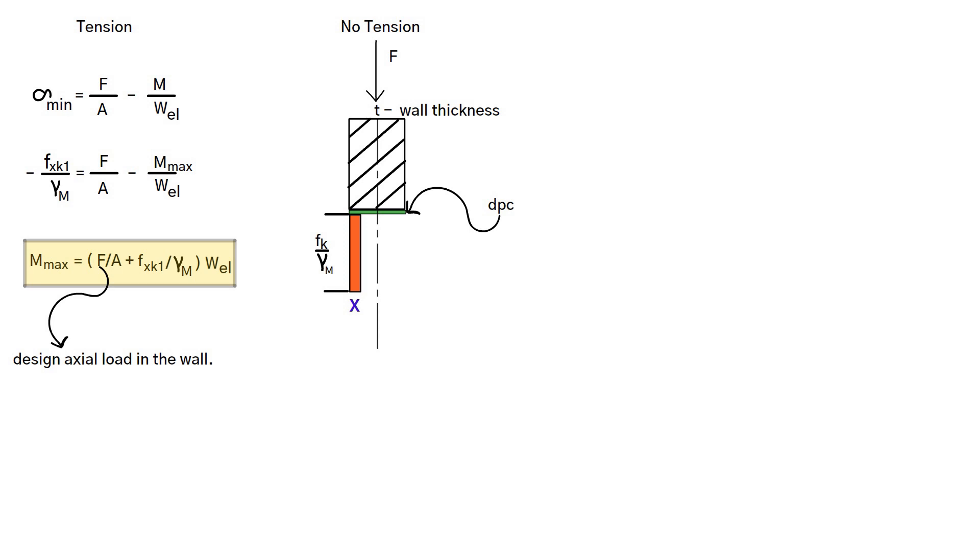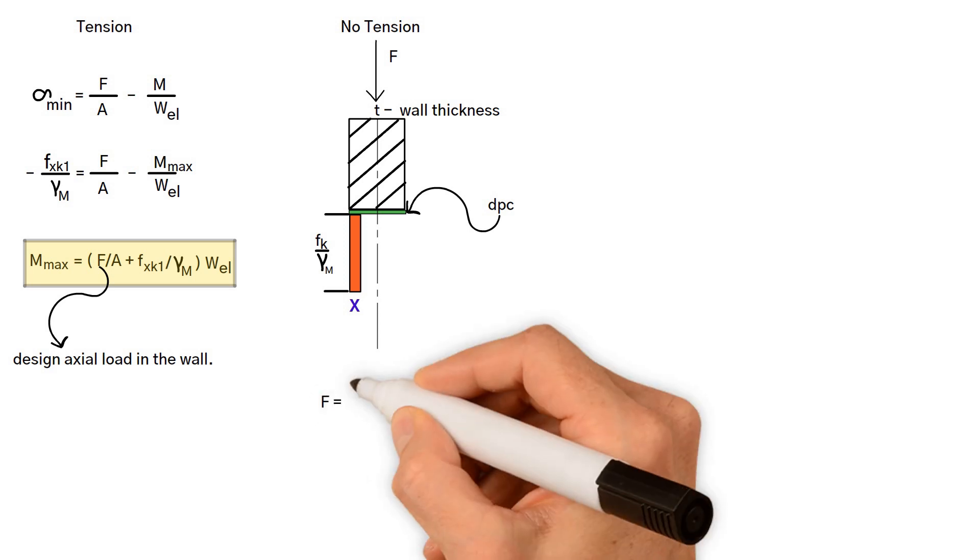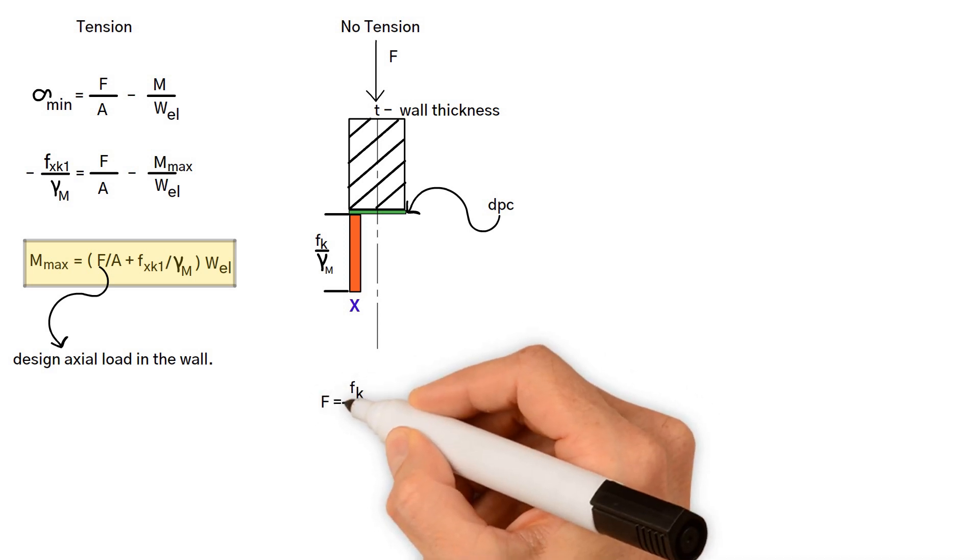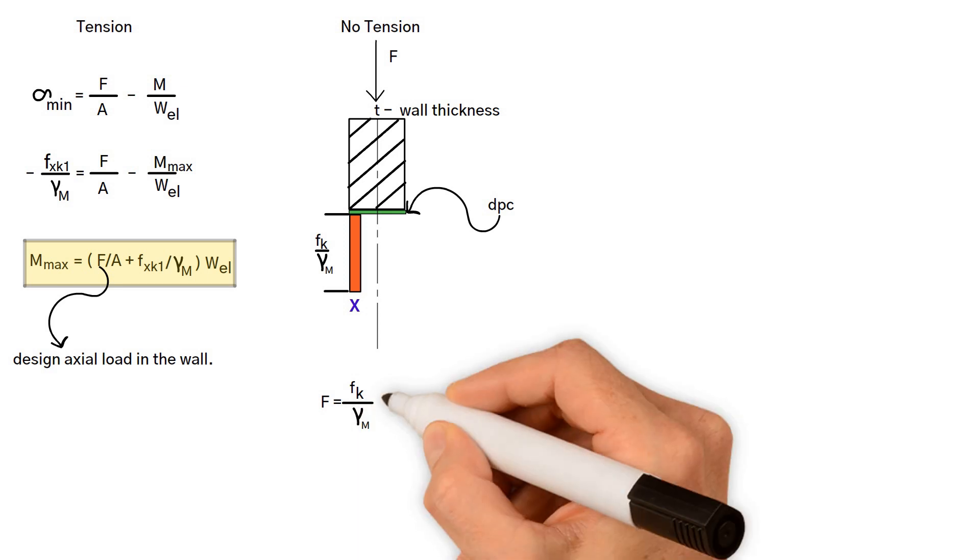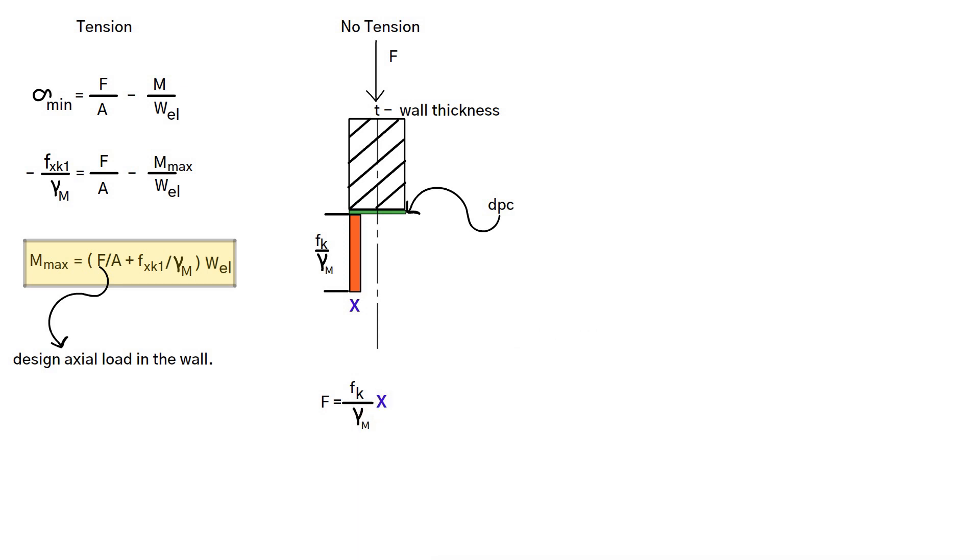In vertical equilibrium, vertical force F equals the characteristic compressive strength divided by the partial safety factor multiplied by X. As a result, X equals vertical force F multiplied by the partial safety factor divided by characteristic compressive strength.